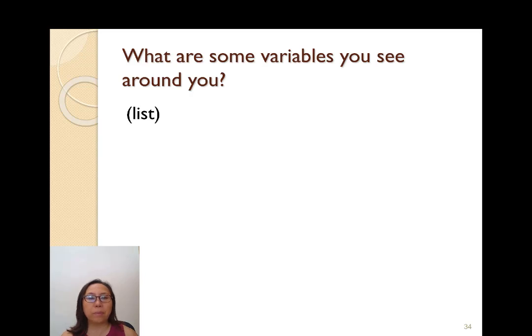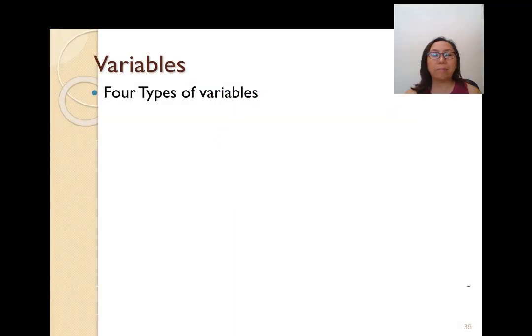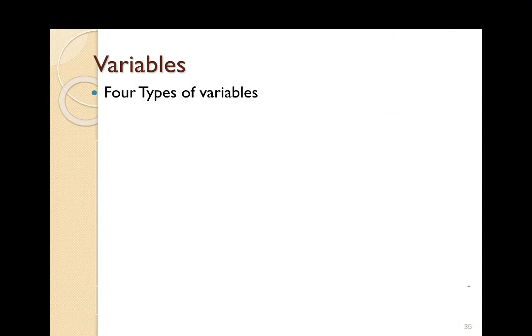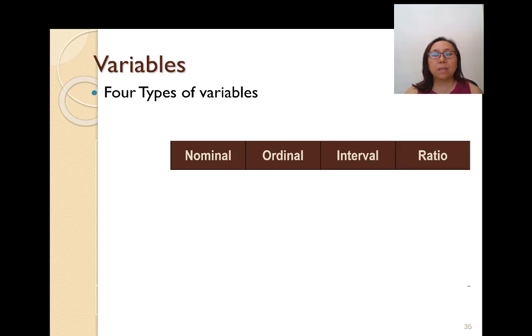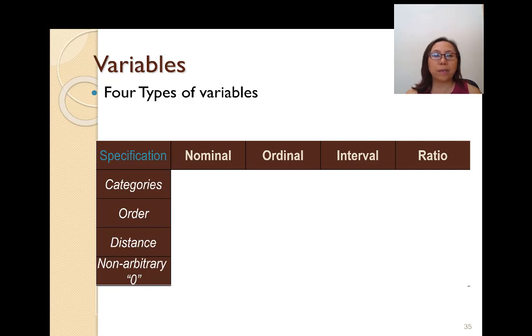A variable is a placeholder that can assume any one of a range of values and may be measured by instruments. Look around you — colors, room temperature, number of people nearby are all variables: measurable data that may have an effect on something else. All variables fall into one of four types, and it's important to know which type you have because different types are treated differently in analysis.